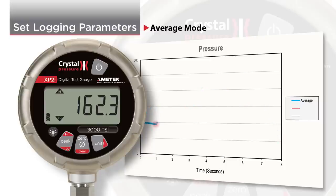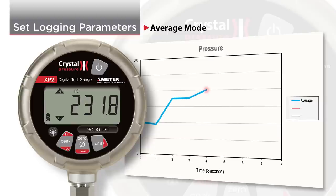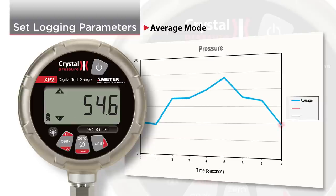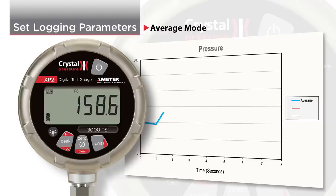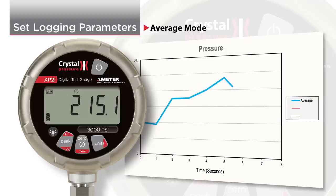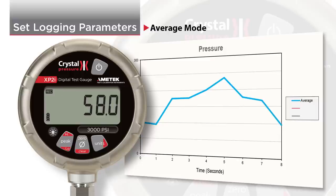Average mode works as follows. Data Logger XP will record data at the logging interval you've selected. The XP2i updates at four readings per second. Average mode will record the average of all the readings taken between logging intervals.